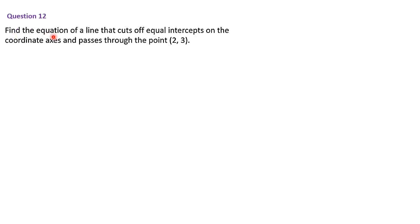Next, we shall discuss question number 12. Find the equation of a line that cuts off equal intercepts on the coordinate axes and passes through the point (2,3). Equal intercepts means a and b are equal — that is, x-intercept equals y-intercept. The line passes through the point (2,3).